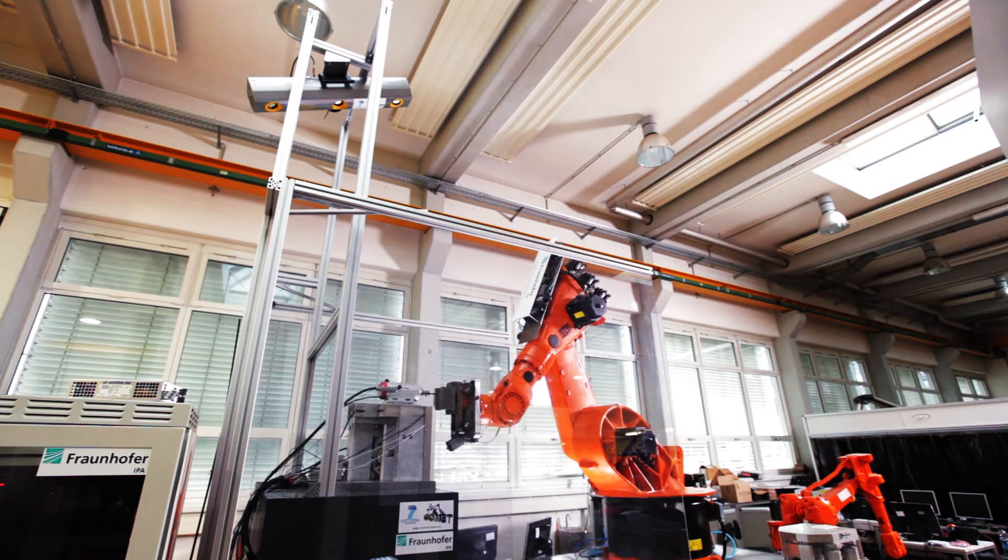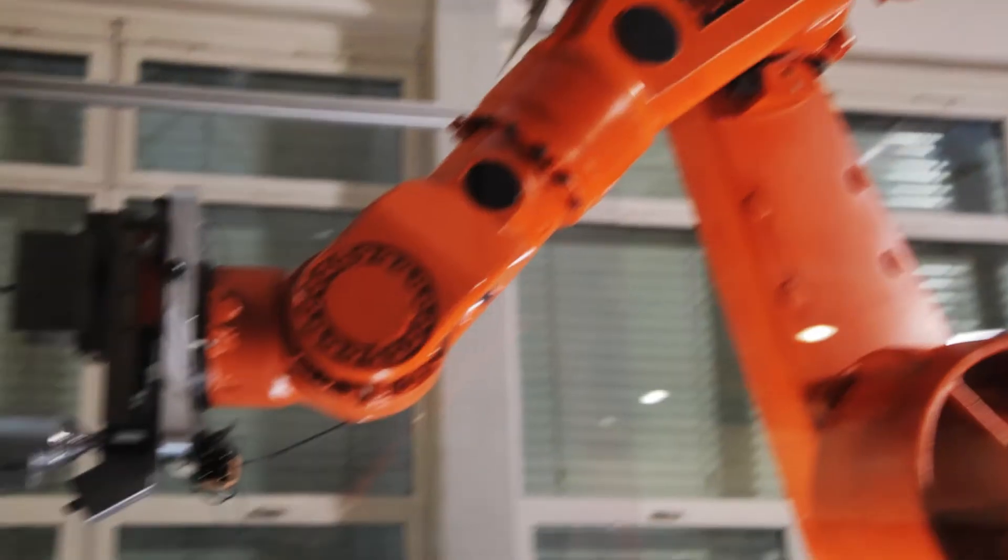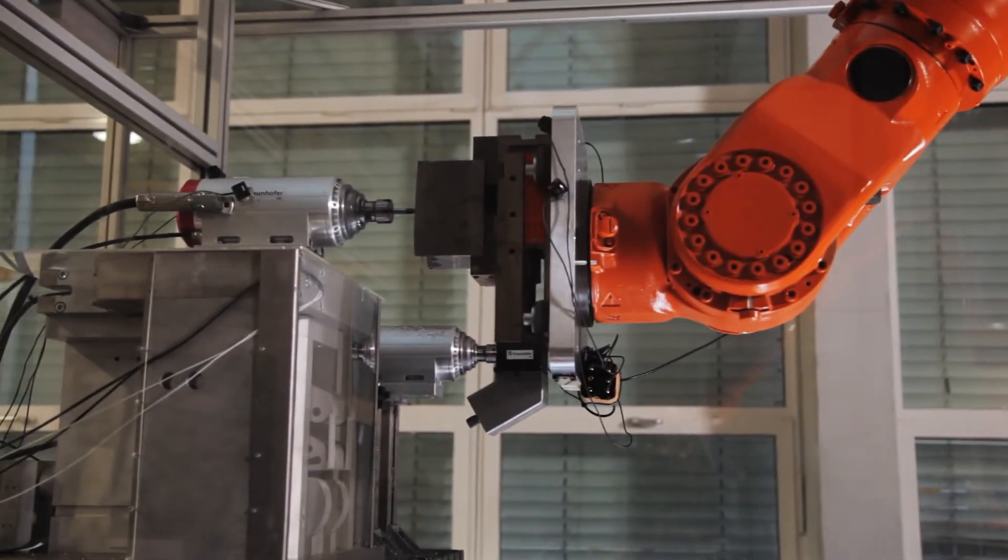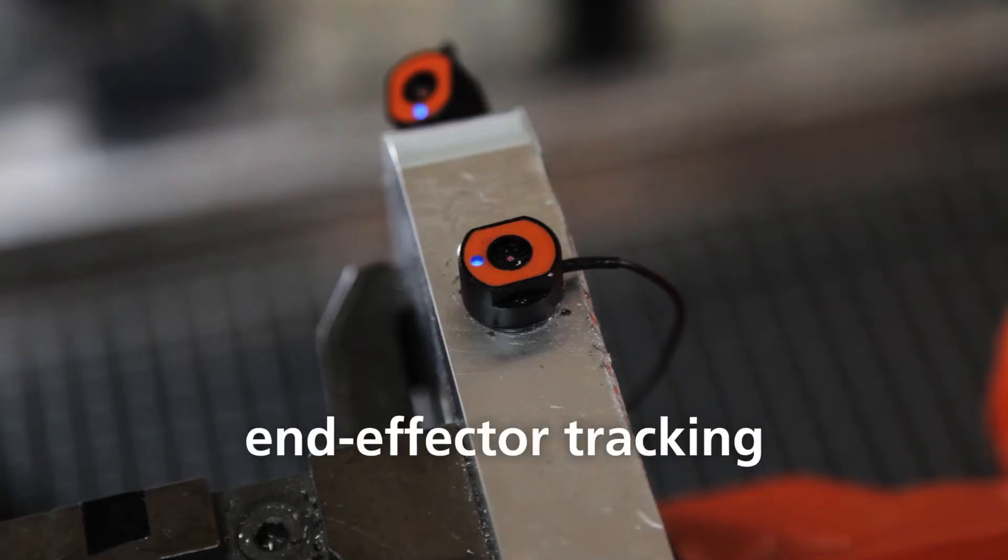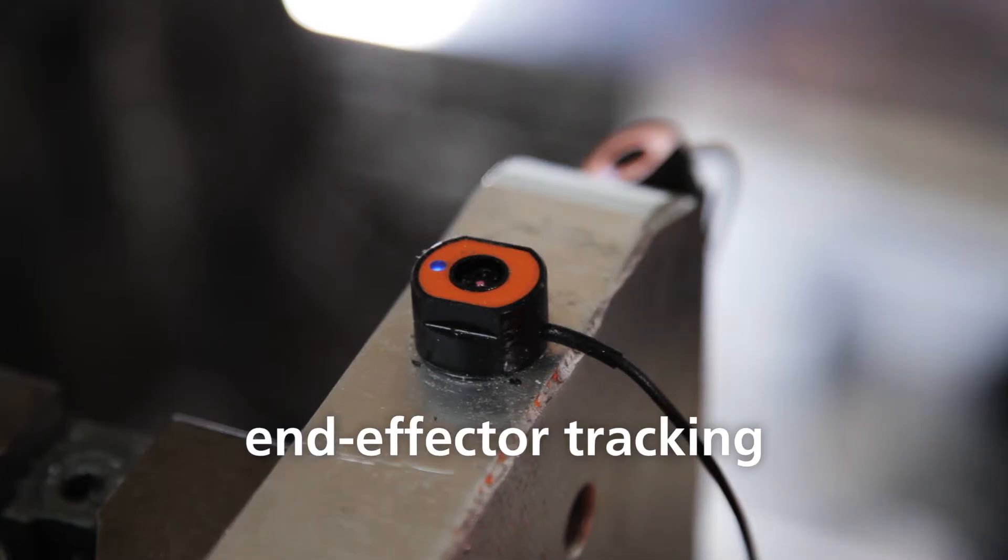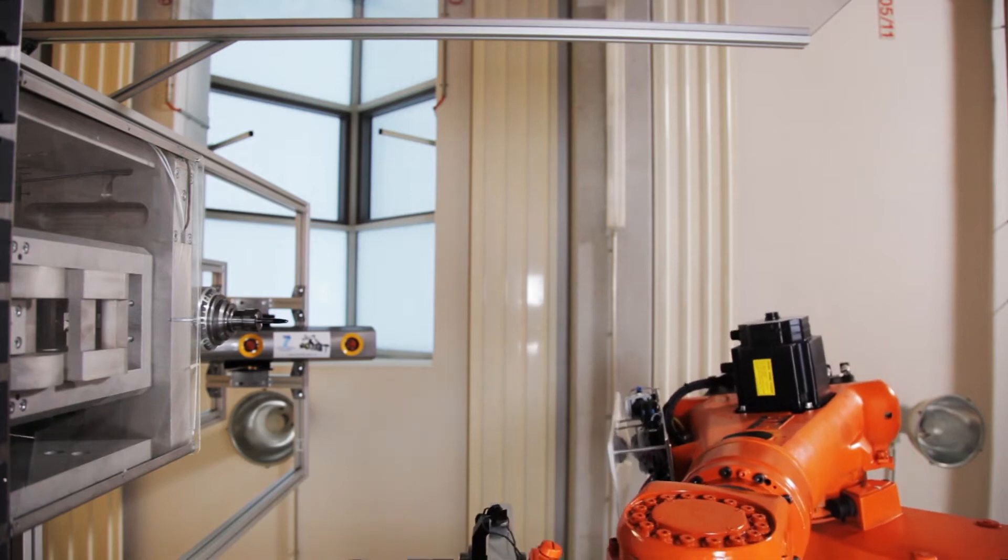The use of flexible robots combined with novel compensation methods has positive impact on machining with robots. The integration of sensors and actuators allows the adaption of the process. Deflections of the robot are tracked online.